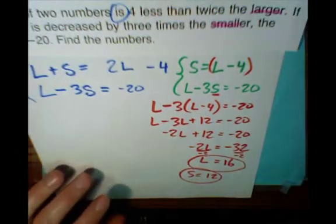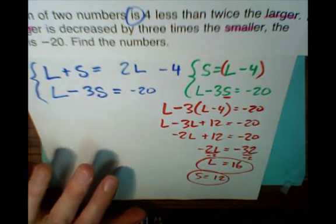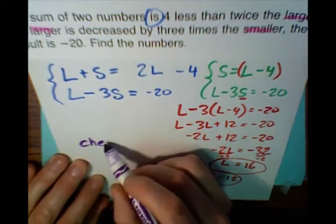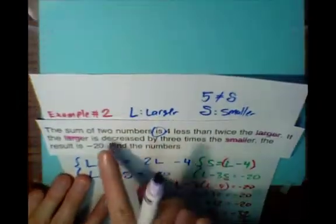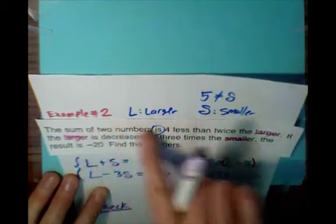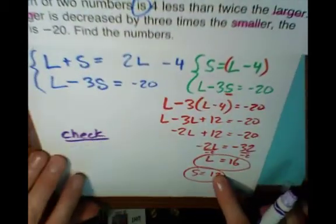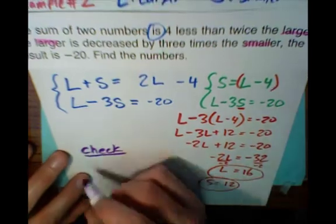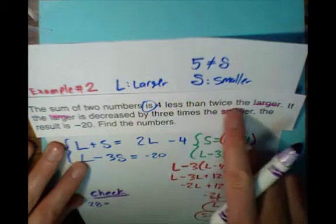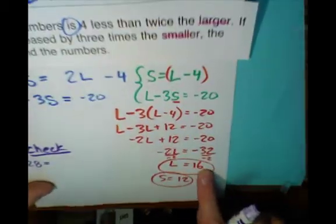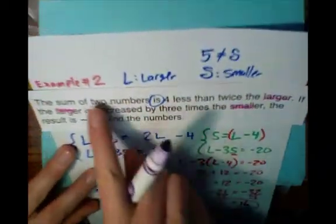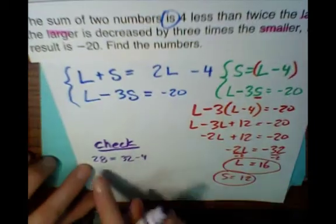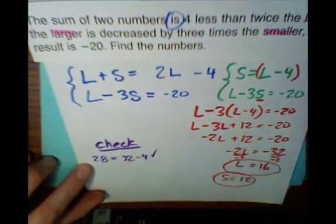Now don't forget — once you've solved the problem, we want to check. Don't check against the original equations; check against the original word problem. The sum of two numbers: we found 16 and 12, and 16 plus 12 is 28. The sum is 4 less than twice the larger: twice 16 is 32, and 28 is indeed 32 minus 4. Check.